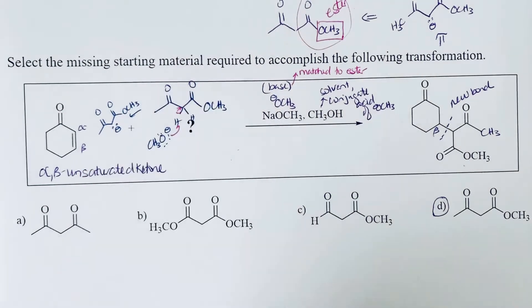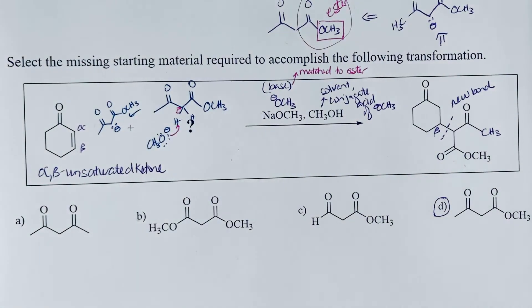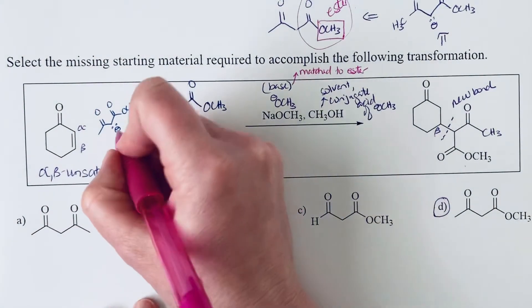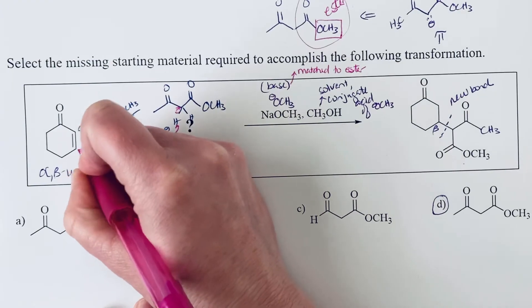So there is the enolate. And so being that softer nucleophile, because it's resonance-stabilized, it's going to react at the beta carbon rather than the carbonyl carbon. So you can see this add to the beta carbon.